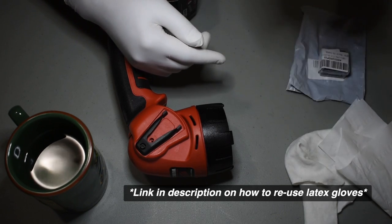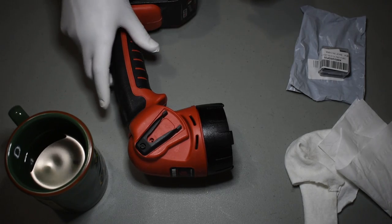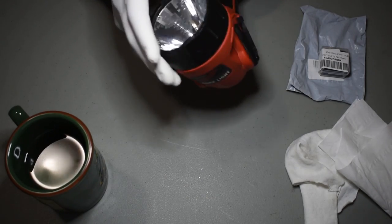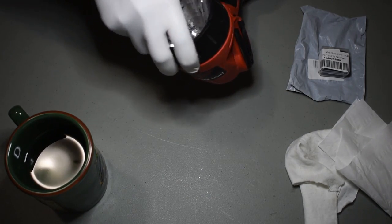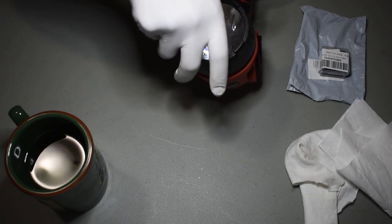The first step is simply to remove the outer cover, and that's done by twisting it counterclockwise.